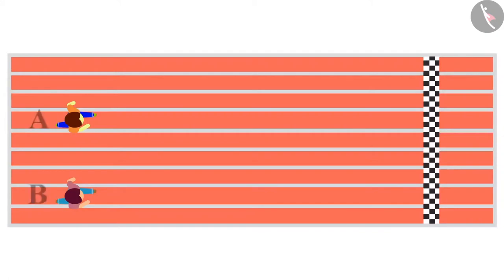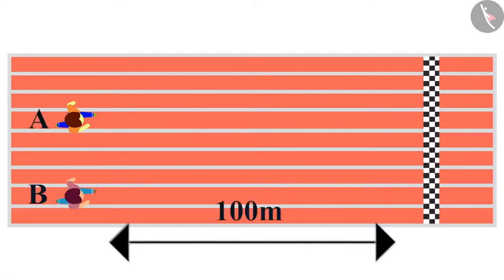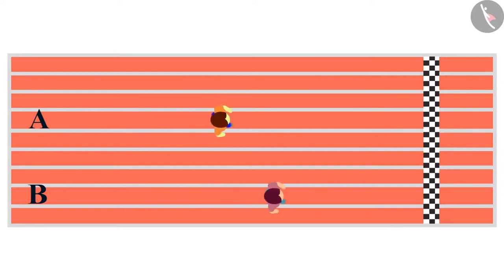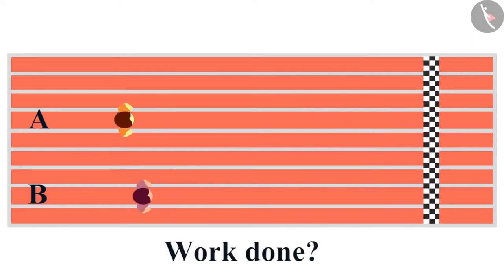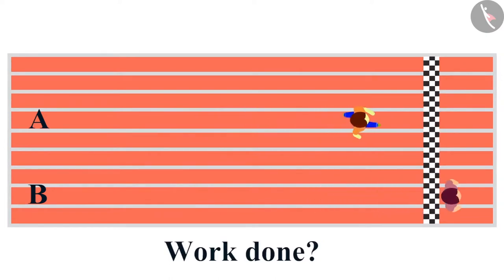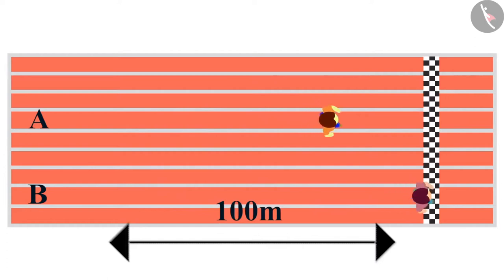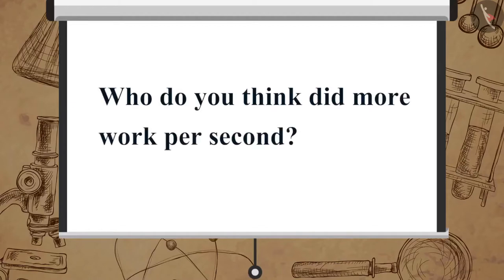Suppose two athletes A and B decided to take part in a 100-meter race. Both are of the same age and have the same weight. A completed the race in 25 seconds and B completed the race in 20 seconds. The same work is done by both A and B, but B takes less time than A to complete the same work. Who do you think did more work per second?